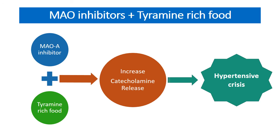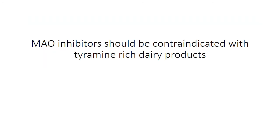So, if MAO-A inhibitors like isocarboxazid and others are given in combination with tyramine-rich foods like dairy products, red wine, etc., it results in a dangerous interaction. Therefore, MAO inhibitors should be restricted with tyramine-rich dairy products. Thank you.